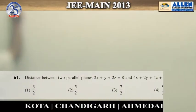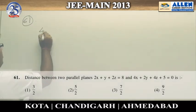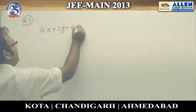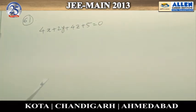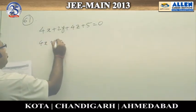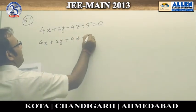Question number 61: two parallel planes are given and the distance between them has to be found. One plane is given as 4x + 2y + 4z + 5 = 0. For the second plane equation, I multiply both sides by 2 so that the coefficients of x, y, and z match, giving 4x + 2y + 4z - 16 = 0.